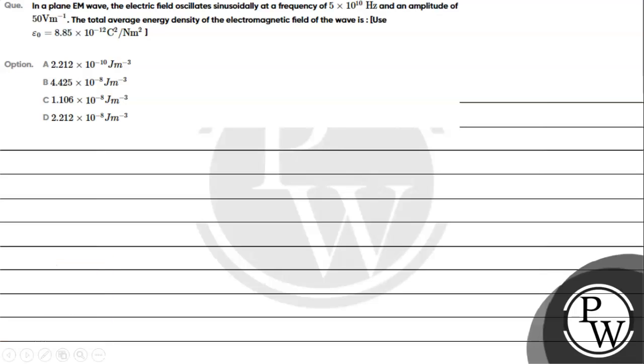Hello, let's read the given question. The question says in a plane electromagnetic wave, the electric field oscillates sinusoidally at a frequency of 5 times 10 raised to 10 Hertz and an amplitude of 50 volt per meter.